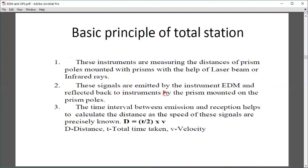These signals are emitted by the instrument EDM and reflected back to the instrument by the prism mounted on the prism pole. The laser beam or infrared rays are released from the EDM and reflected from the prism. The time interval between emission and reception helps calculate the distance using the formula d equals one-half v t, where d is distance, t is time, and v is velocity.